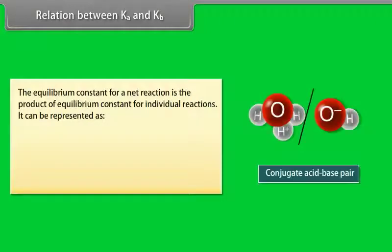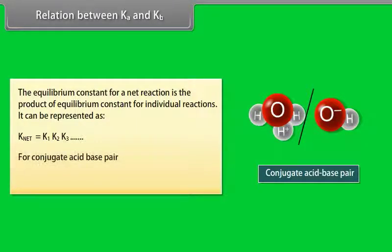The equilibrium constant for a net reaction is the product of equilibrium constants for individual reactions: K_net = K₁ × K₂ × K₃ and so on. For a conjugate acid-base pair, Ka × Kb = Kw.